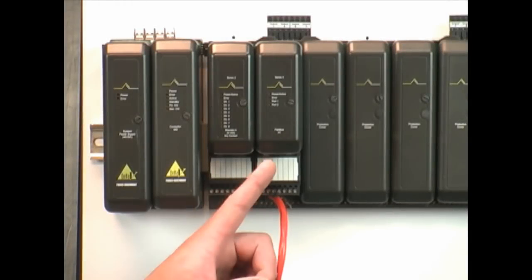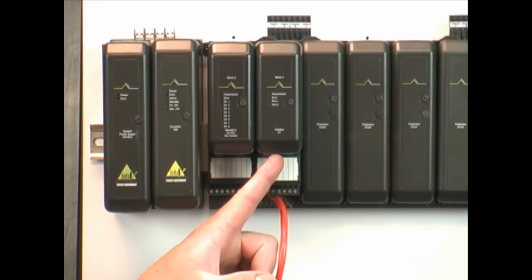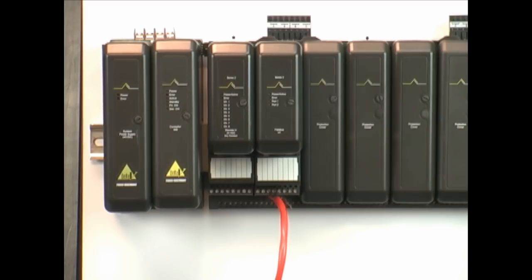So the first component in any Foundation Fieldbus segment is the H1 interface. Here you see a typical two port H1 interface connected into a Delta-V controller and this could be with any DCS system,